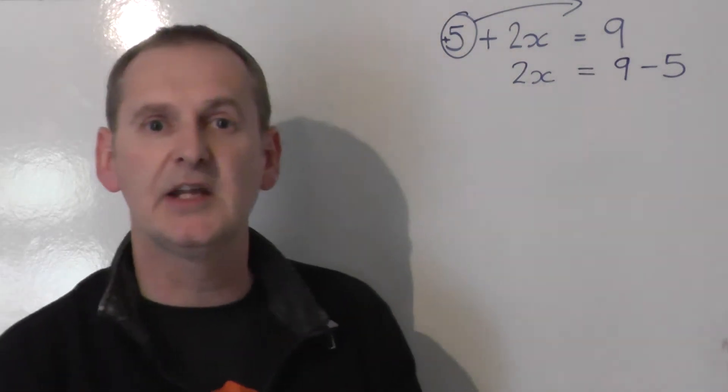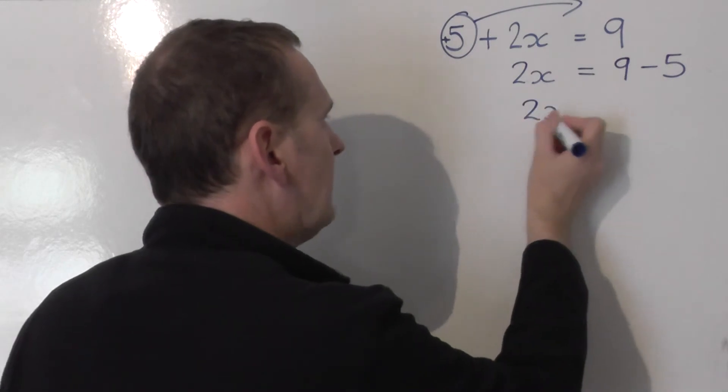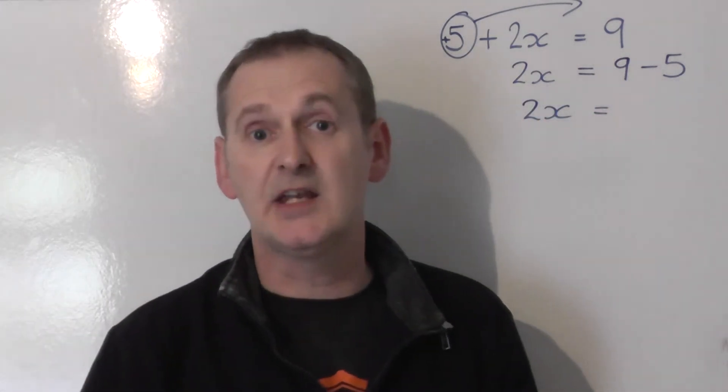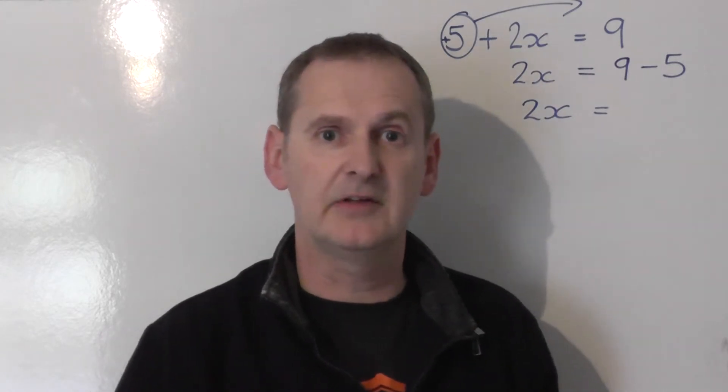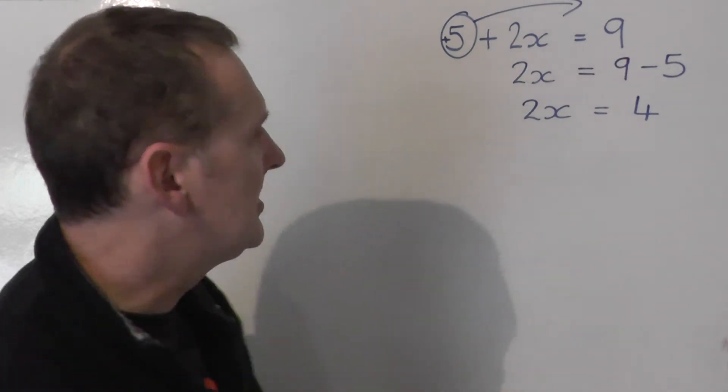So the first line is 2x is equal to 9 take 5. Let's tidy up a bit. Leave the 2x alone equals, and we'll just sort out on the right-hand side what 9 take 5 is. 9 take 5 is simply 4. So we end up with 2x is equal to 4.